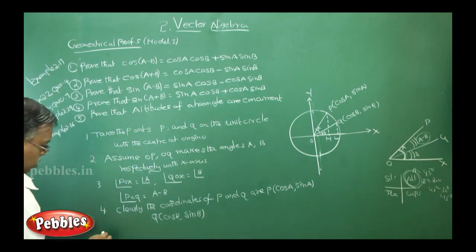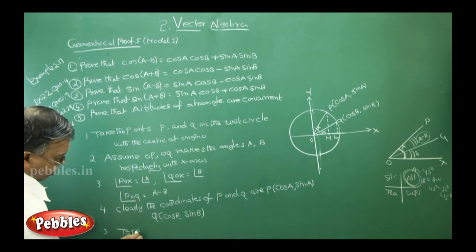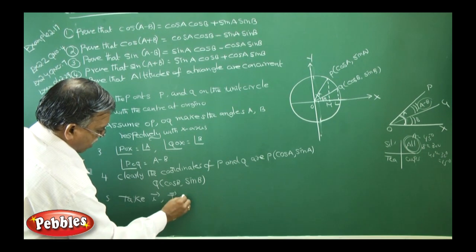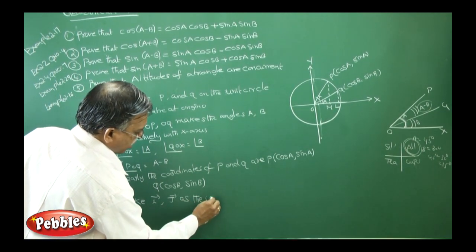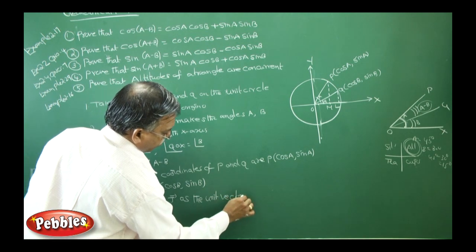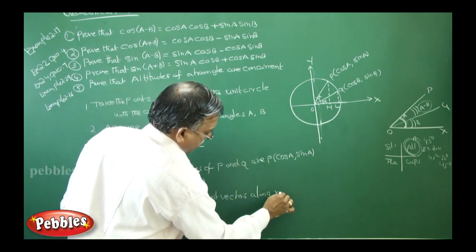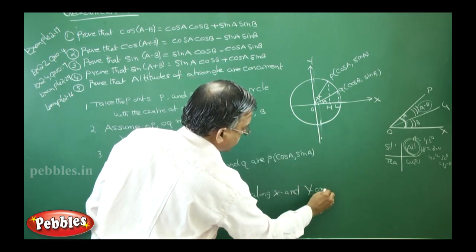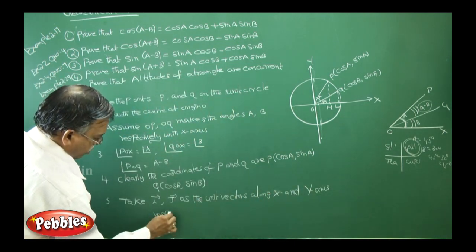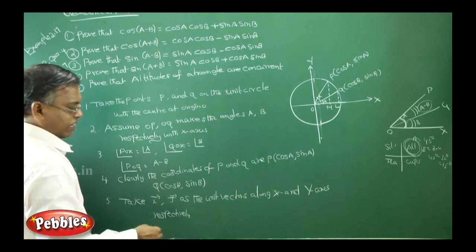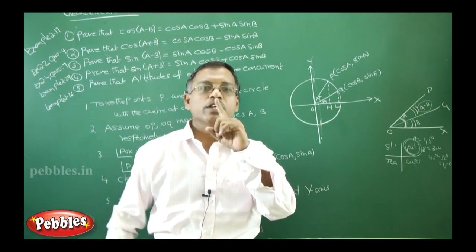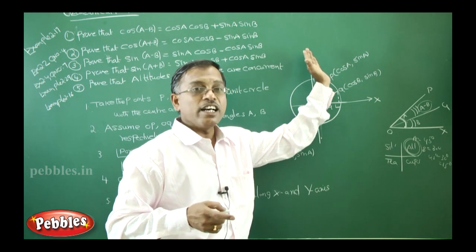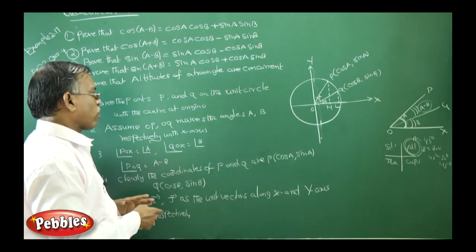Next one. Take I vector, J vector as the unit vectors along X and Y axis respectively. You know what is the unit vector? It is the vector whose magnitude is one unit. So we are assuming the unit vector along X axis is I vector, Y axis is J vector. So these are the first five points you need to remember.